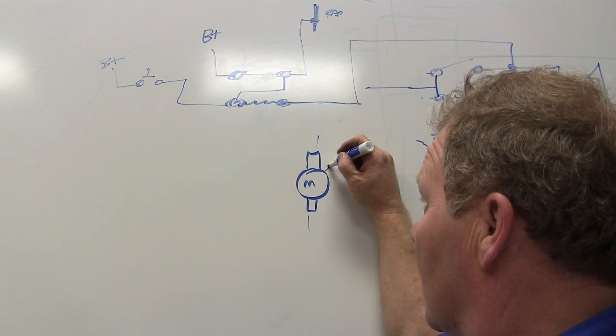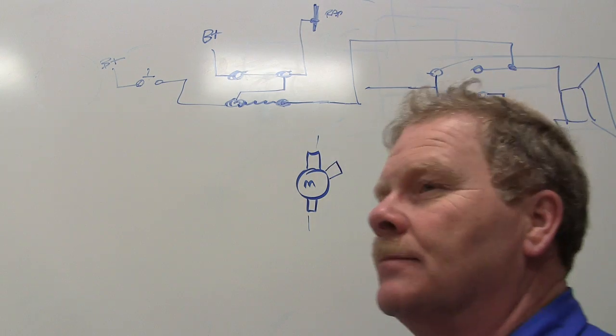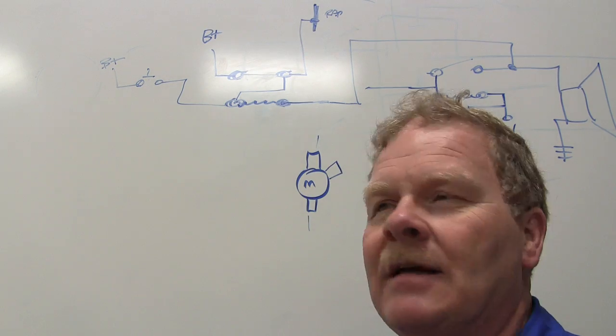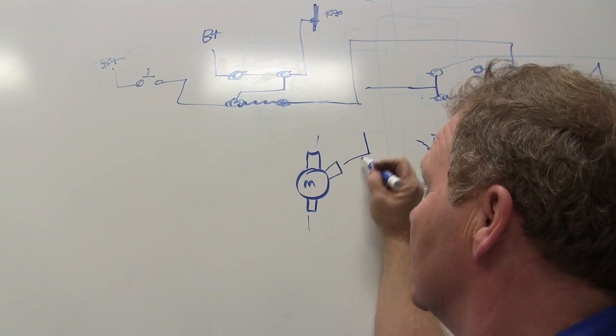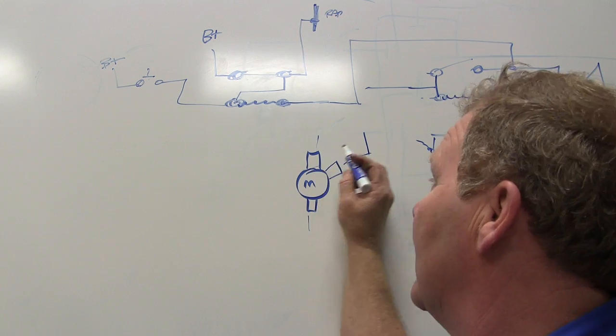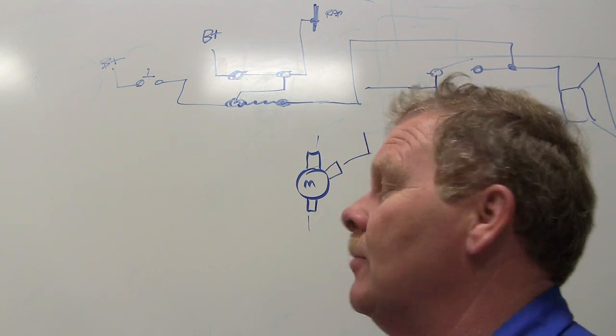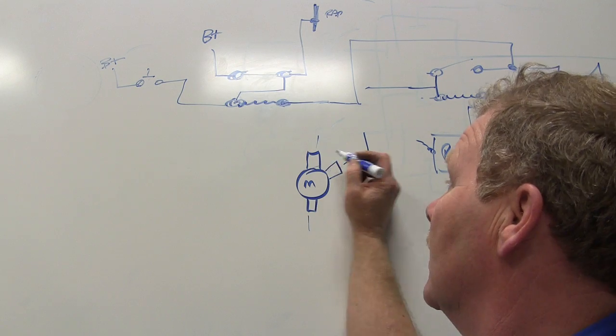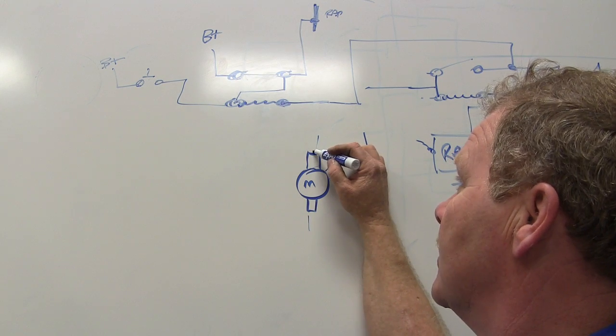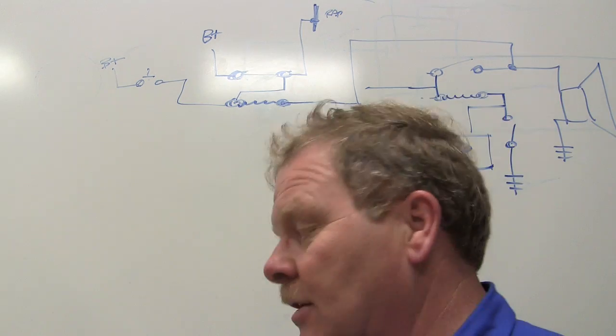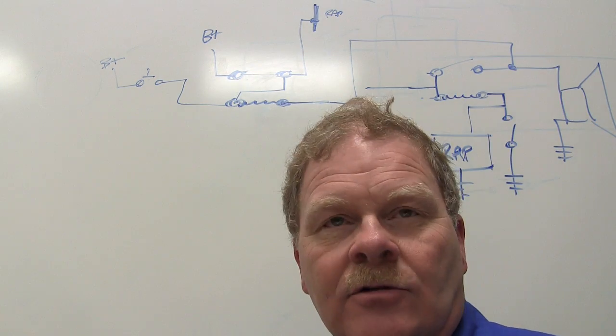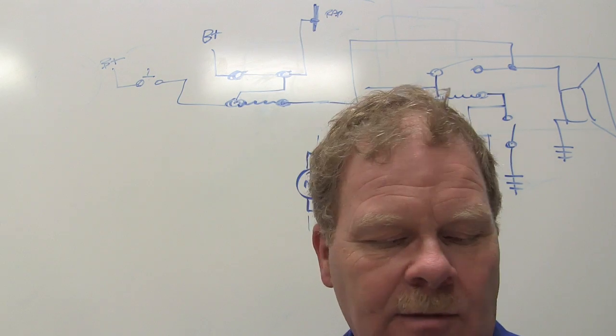However, you're going to also see some that look like that. That means there's another brush for another speed. Now, whoever wrote this test talked about that, but if you see a two-speed motor, you may see one with a brush here and a brush here. If you power up this brush, the motor runs at a different speed than if you power up that brush. You got me? You understand what I'm saying? You understand how these commutators work, right?